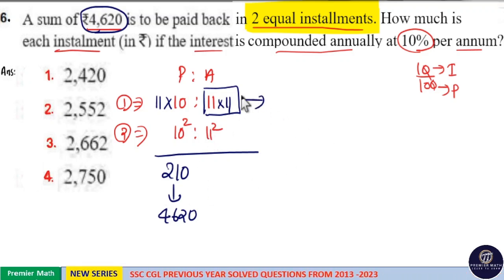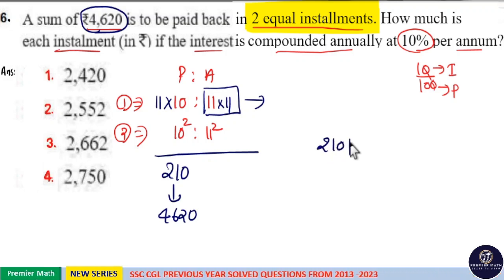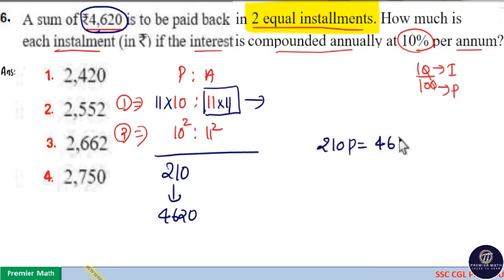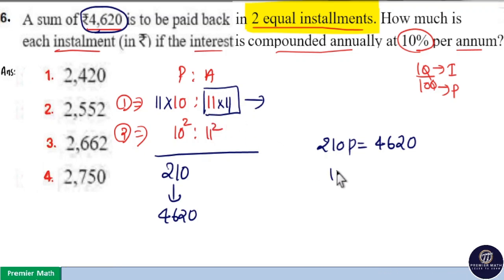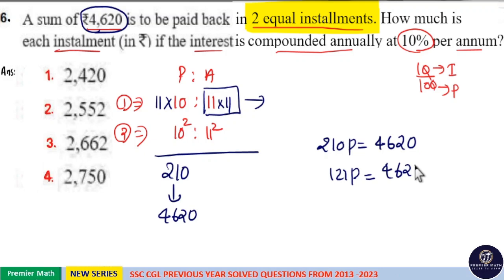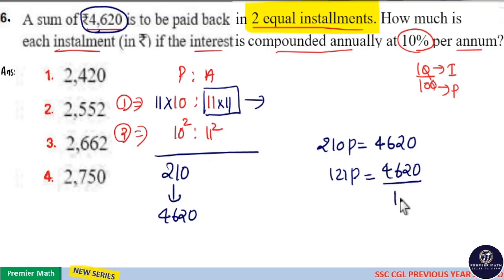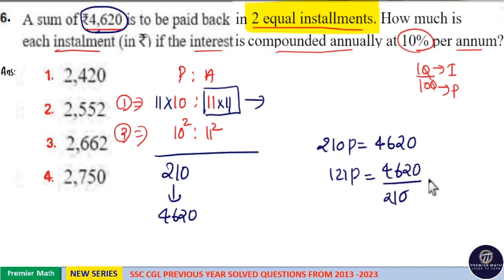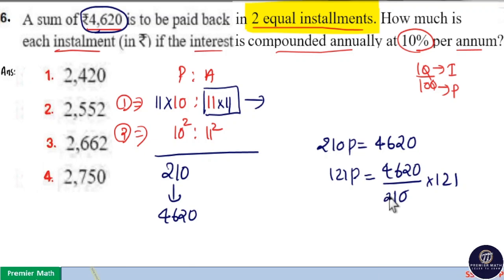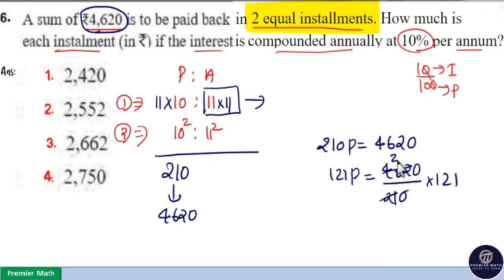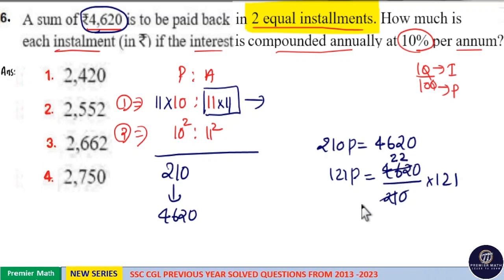So if 210 parts is equal to 4,620, then we have to find out what 121 parts equals. 121 parts is equal to 4,620 divided by 210, multiplied by 121. Here, 21 goes 2 times into 46 with remainder 4, so 21 goes 2 times into 42.